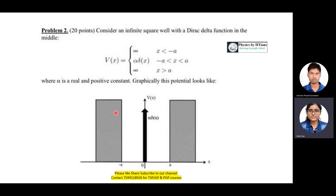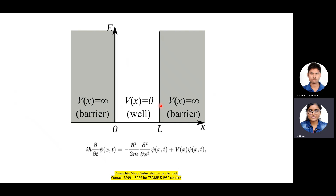The first question asked in various institutes, IITs, and interviews is: suppose there is an infinite potential well with two rigid walls — for x less than minus a the potential is infinite, for x greater than a the potential is infinite, and there is a delta function potential in between this region. Can you sketch the wave function for this kind of potential?